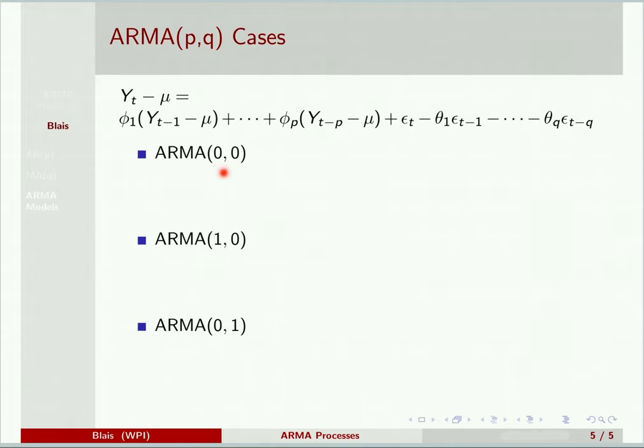So in ARMA(0,0), in that case, we're remembering no past days and no past noise terms. And so all that will remain is ε_t. And we see this is a white noise. This is nothing more than just a white noise process.